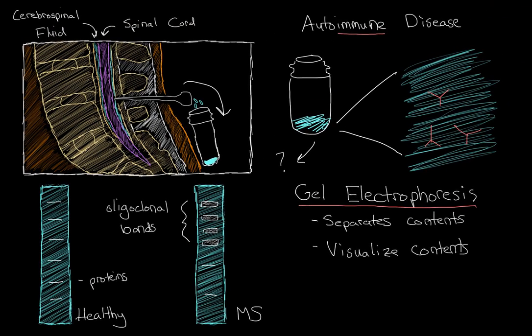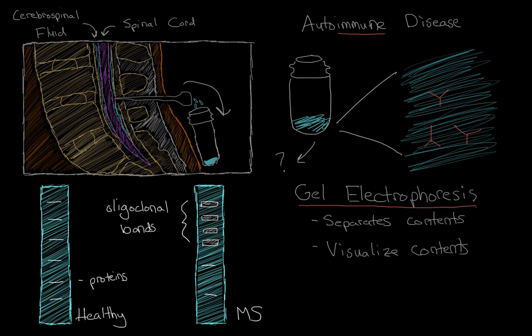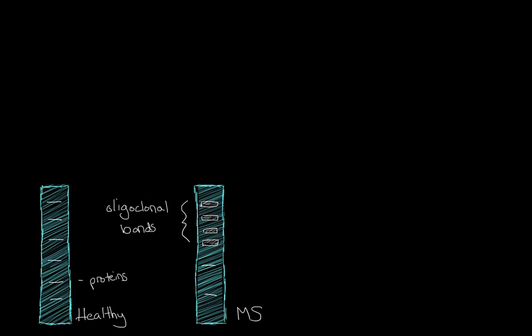So we have two pieces of evidence. We have pictures of the brain that showed the lesions, and we have evidence that shows that the immune system is involved in the central nervous system. But there is still one more test that we can do to definitively say that this person has multiple sclerosis.